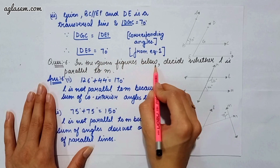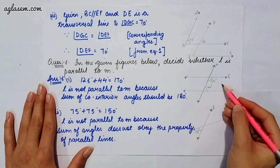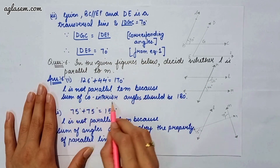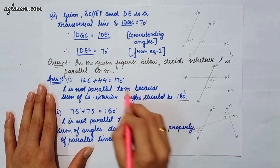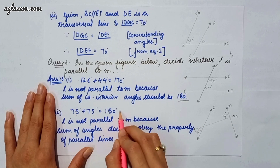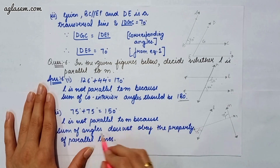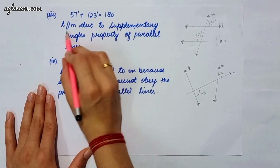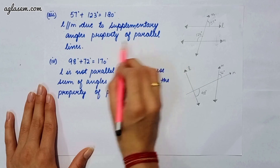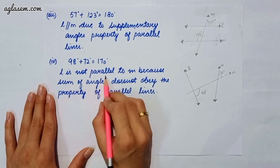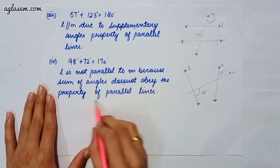Question 6 says: decide whether L is parallel to M. Part one: 126 plus 44 equals 170, so L is not parallel to M because the sum of co-interior angles should be 180. Part two: 75 plus 75 equals 150, so L is not parallel to M. Part three: 57 plus 123 equals 180 degrees, so L is parallel to M due to supplementary co-interior angles. Part four: 98 plus 72 equals 170, so L is not parallel to M as the angles don't satisfy the property.